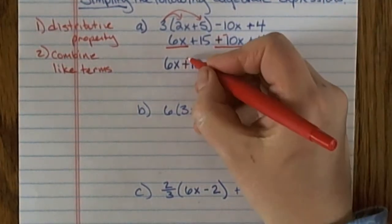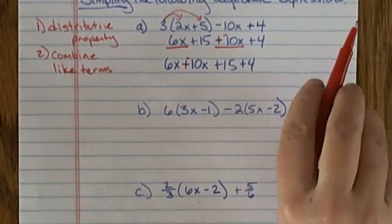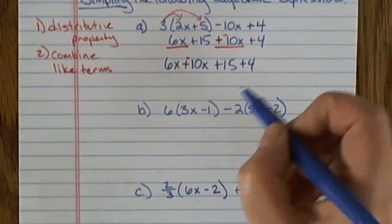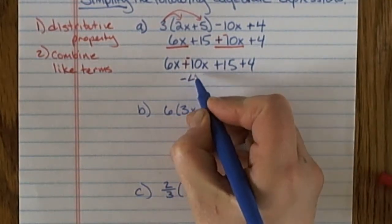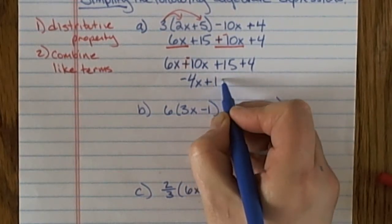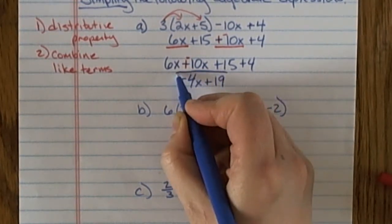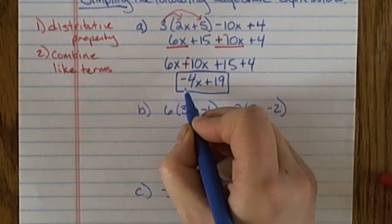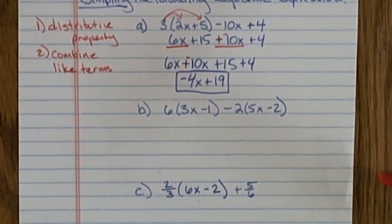Now I'll combine my like terms. 6x plus a negative 10x, or 6x minus 10x, is negative 4x. And 15 plus 4 is positive 19, so I get plus 19. That's my final answer. Those two terms are not like terms, so I stop right there.